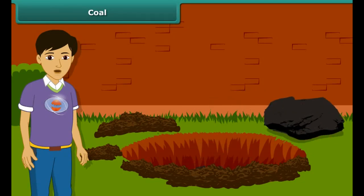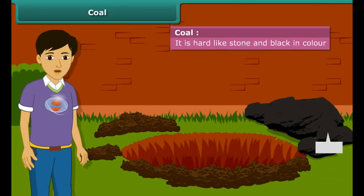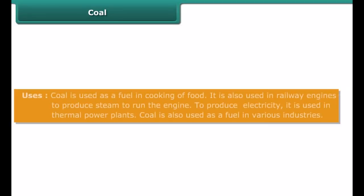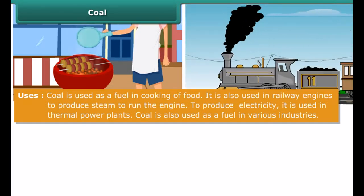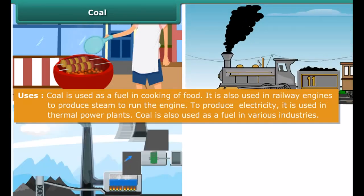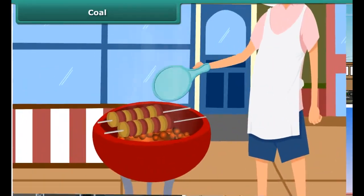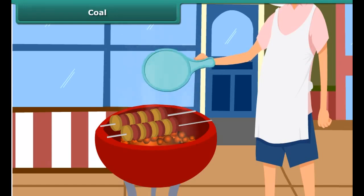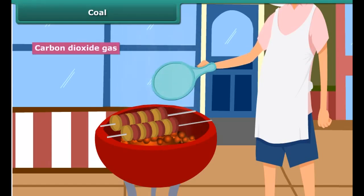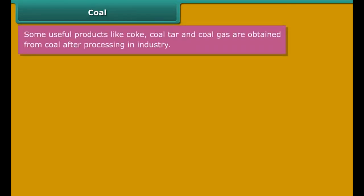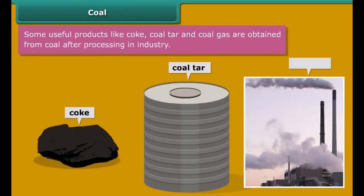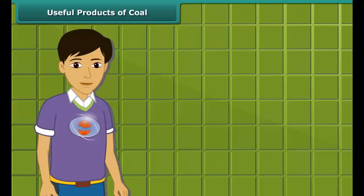Let us start with coal. You may have seen coal in your surroundings. It is hard and black in color. Coal is used for a variety of purposes such as cooking food, running railway engines, thermal plants, and various industries. After heating in air, it starts burning and produces carbon dioxide gas. You will be surprised to know that some useful byproducts of coal — like coke, coal tar, and coal gas — are obtained directly from coal.